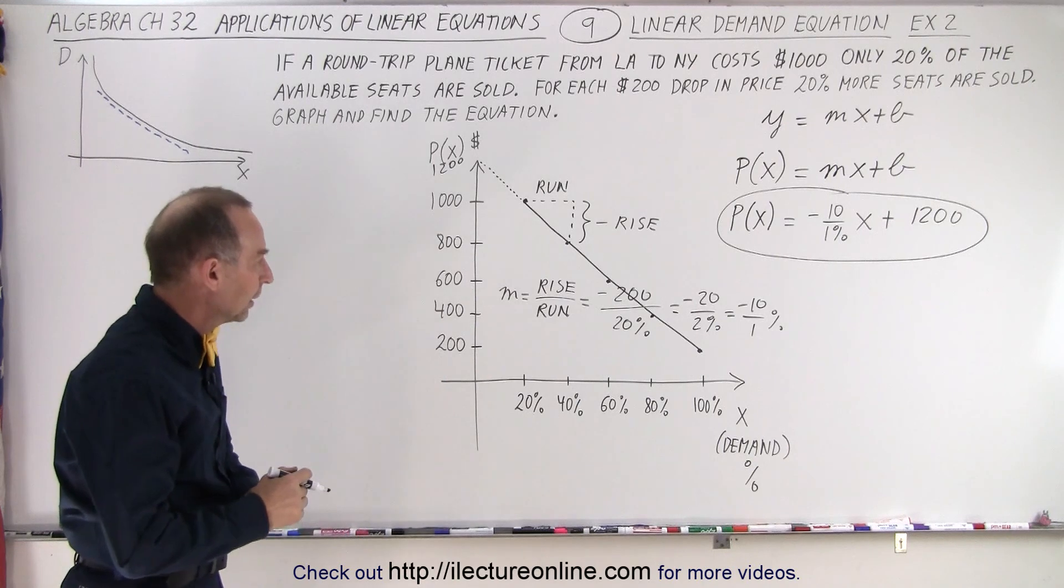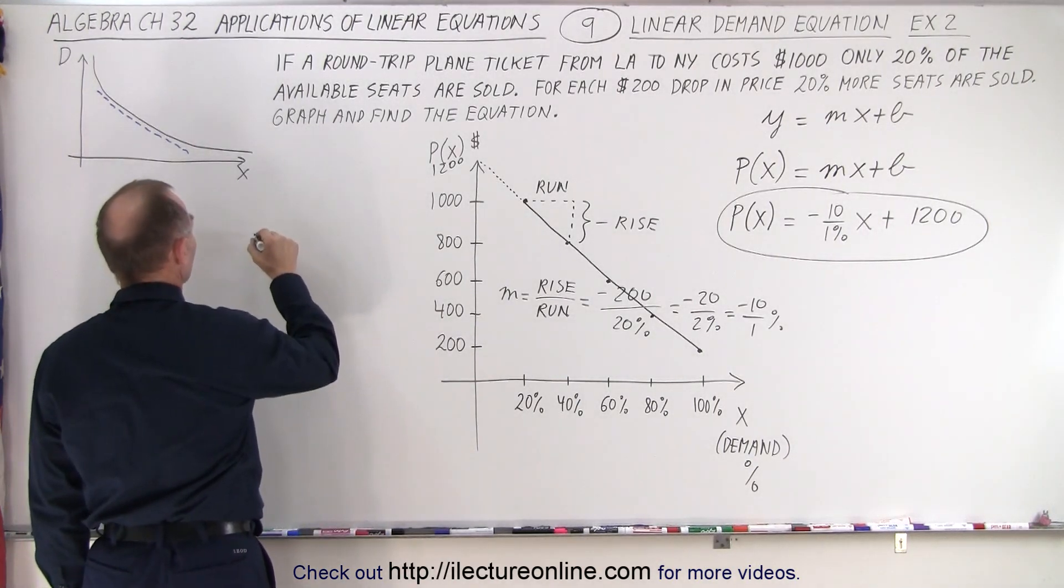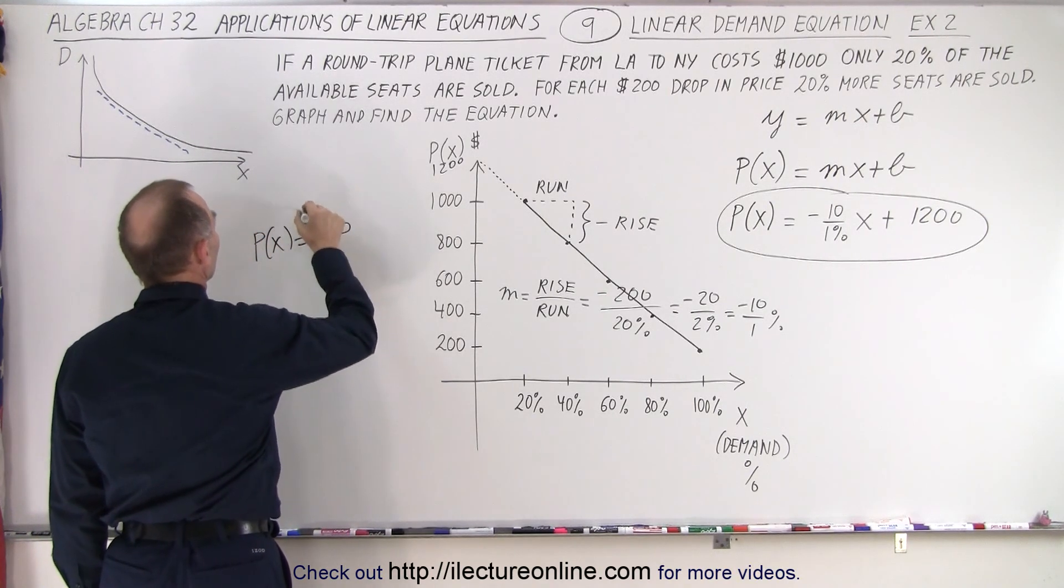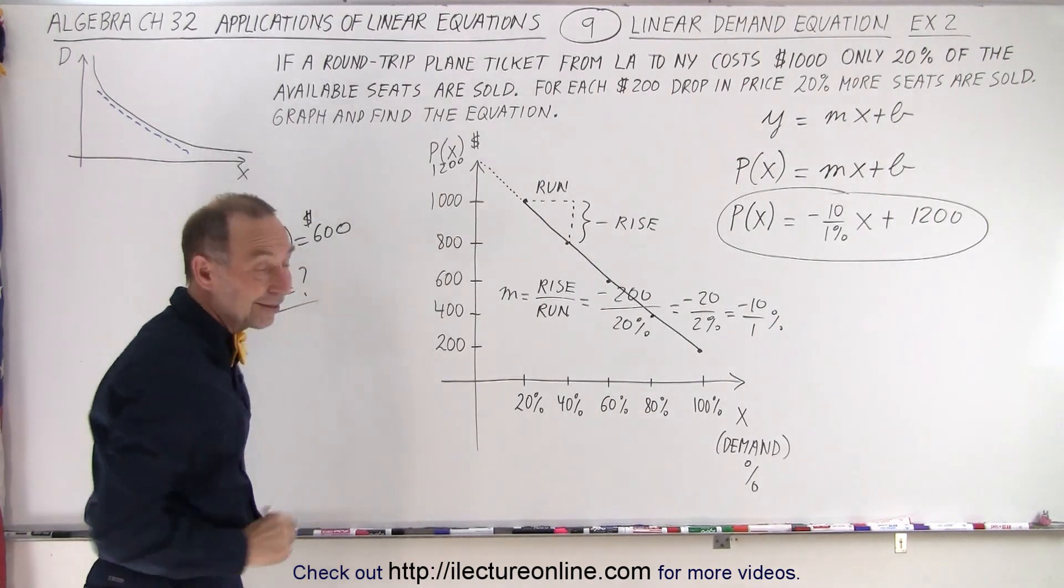Alright. So now, let's do an example. Let's say that the price is $600. So the price P of x equals $600. What would x be equal to? Question mark. So let's plug that in and see what happens.